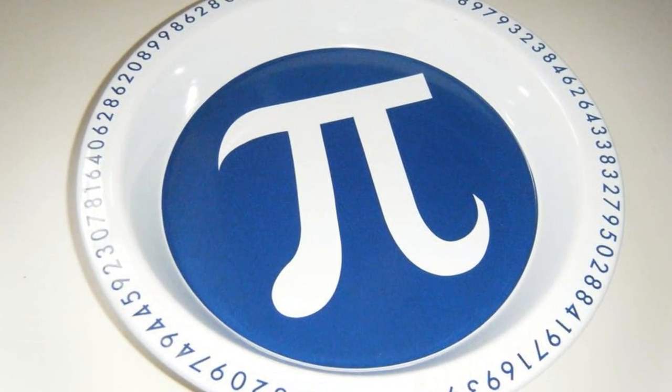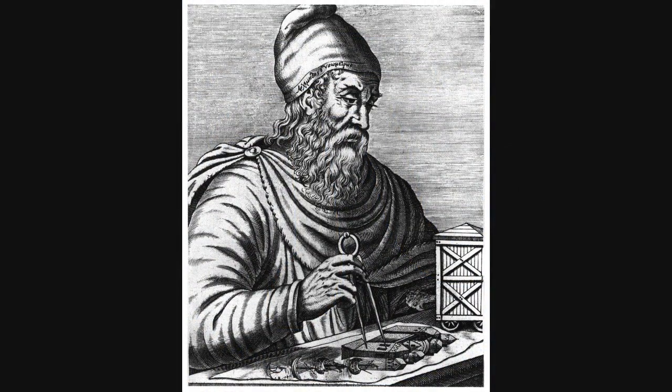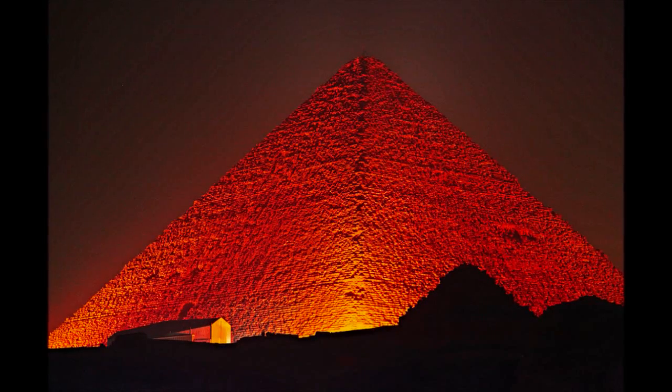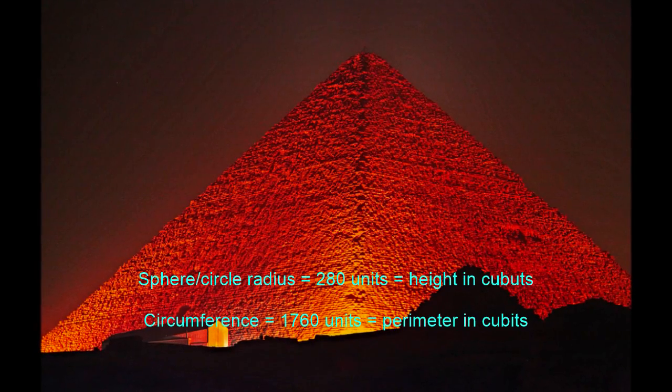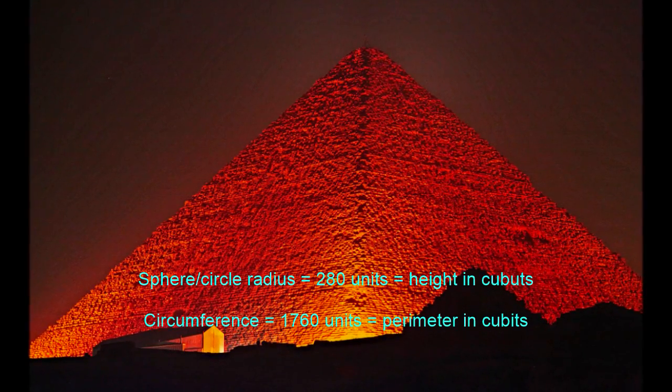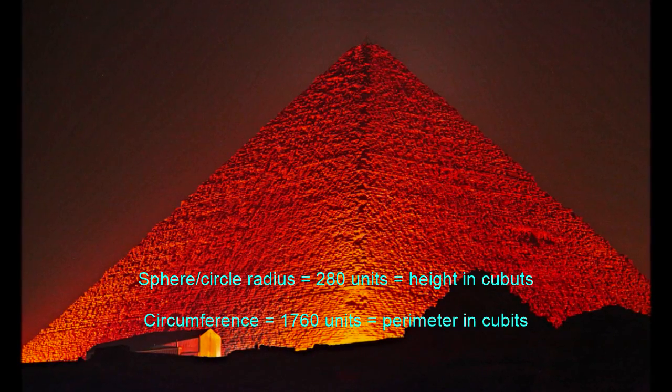Also, nobody is supposed to have known about Pi until the time of the Greeks. Yet, if we imagine the pyramid representing a sphere of radius 280 units and a circumference of 4 times 440 units, which is 1760,